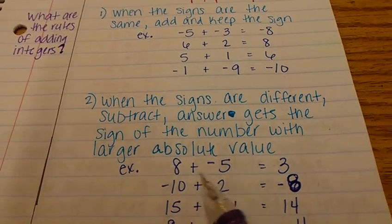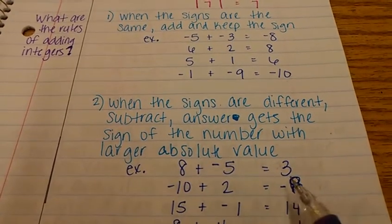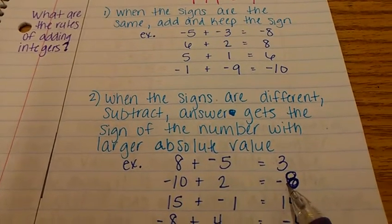Basically, it's like good guy, bad guy. Eight is bigger, so he wins the battle. Ten is bigger, so he wins the battle. That's why our answer is negative here.